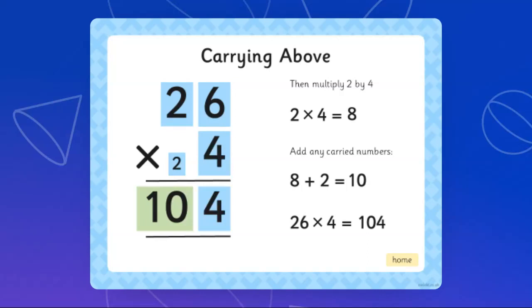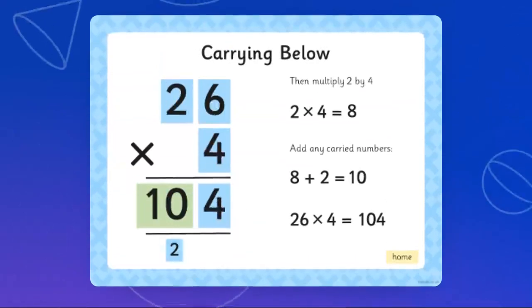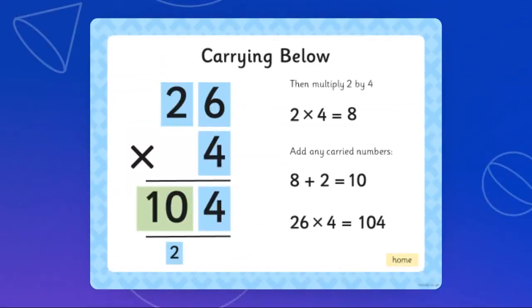Always remember that whatever method that we do, it is going to get us to the same answer. So as you can notice, 26 times 4 is 104. When we use the method of carrying above and carrying below, 26 times 4 equals 104 as well.